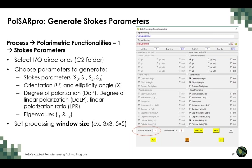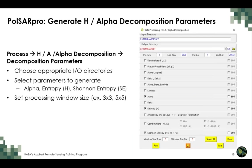Next, generate entropy and alpha decomposition parameters in PolSARpro. Under the Processing menu, select the Entropy and Anisotropy-Alpha decomposition tool. Choose the appropriate input and output directories and select the parameters to generate: alpha, entropy, and Shannon entropy. Use the same 5×5 processing window size as used for the Stokes parameter tool. Once the tool is run, check that the processed parameters are stored correctly in the C2 folder.